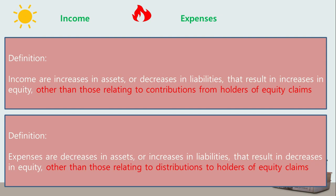For example, the rendering of service for cash results in an increase in an asset — cash — but that increase did not come from the contribution of a shareholder; rather, it comes from a sale, so this is income. Or take the consumption of electricity: it recognizes a decrease in an asset because you have to pay for it, and that payment is not owing to distributions to owners. In other words, contributions or investments by equity holders are not income, just as distributions to equity holders such as dividends or profit sharing are not expenses.